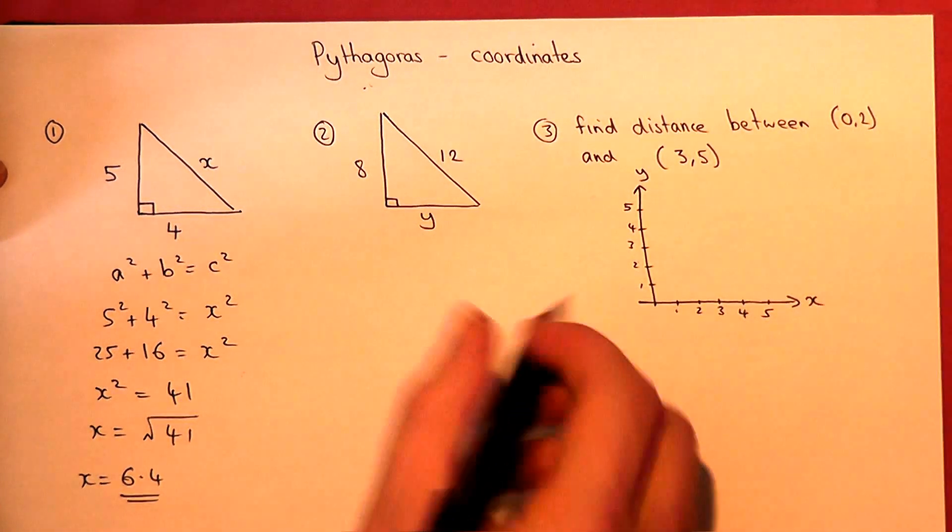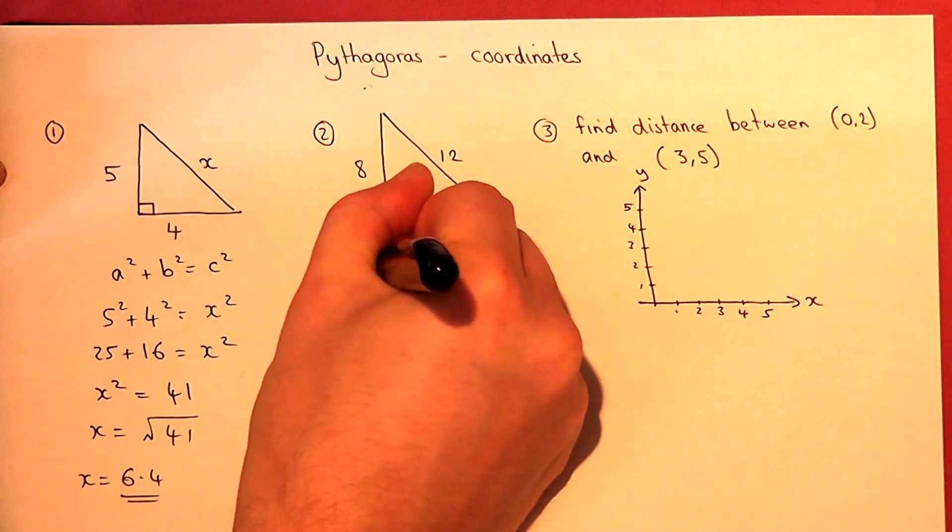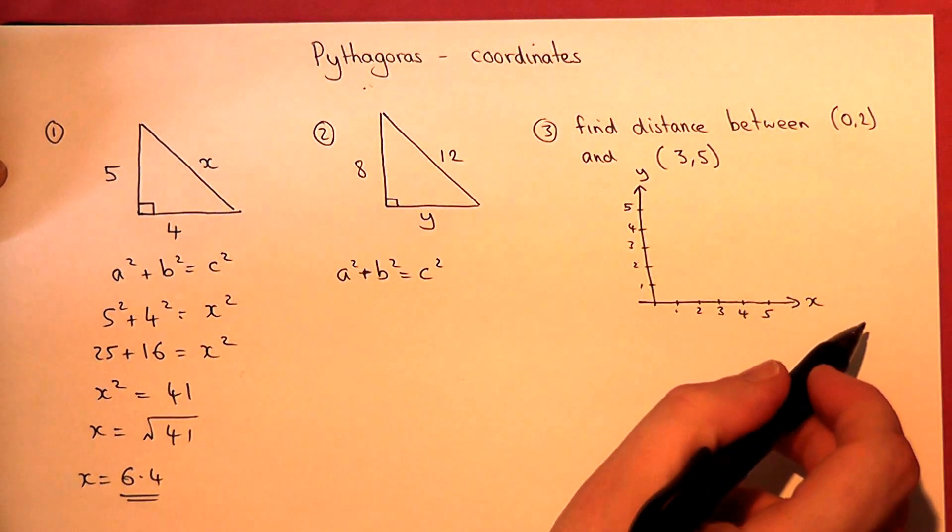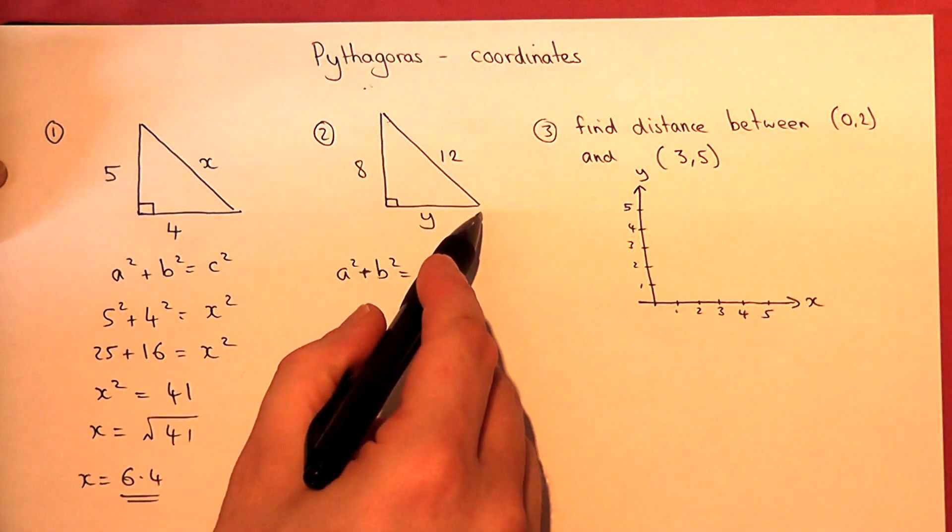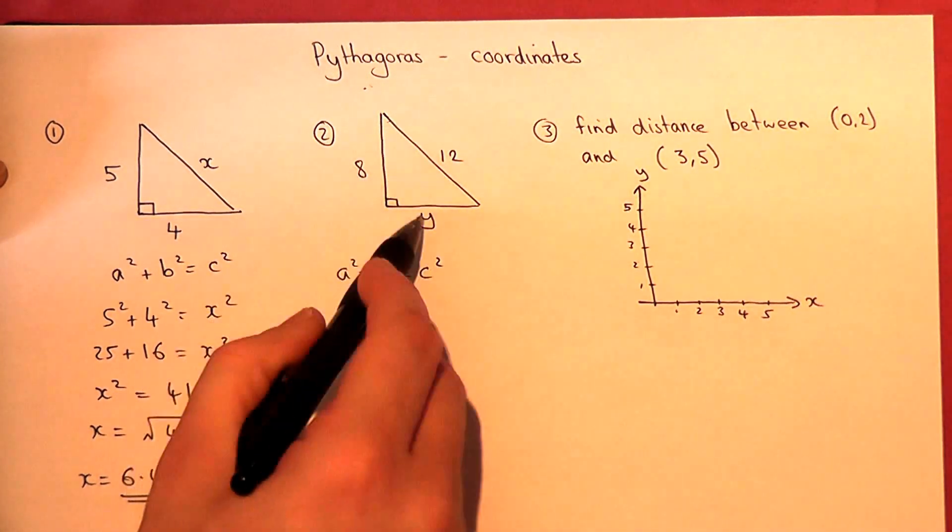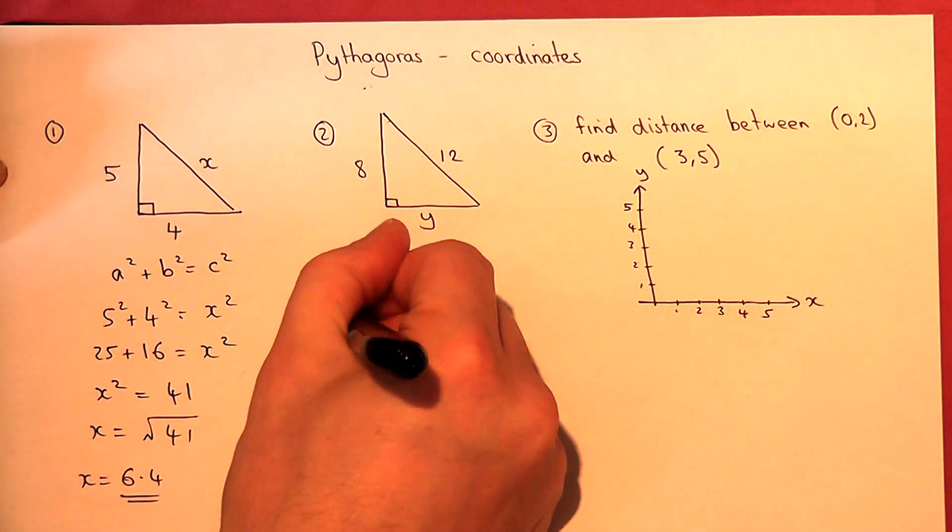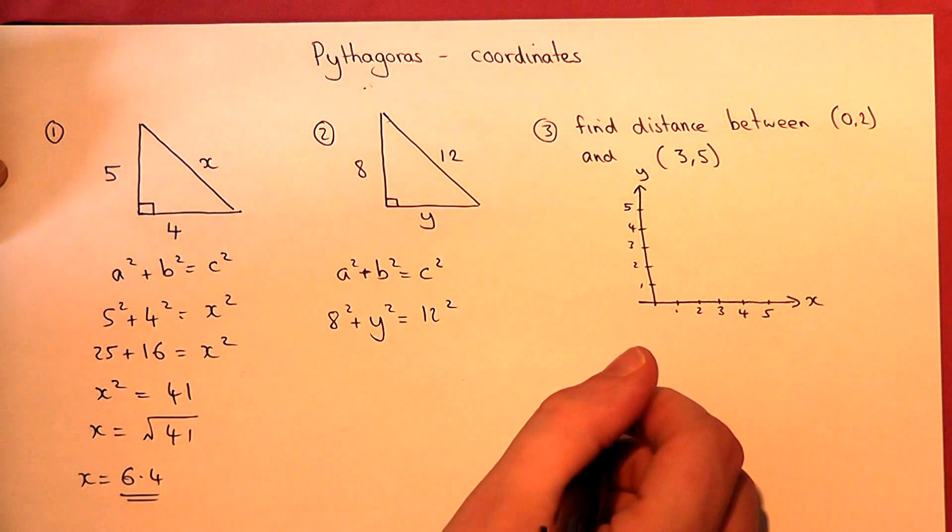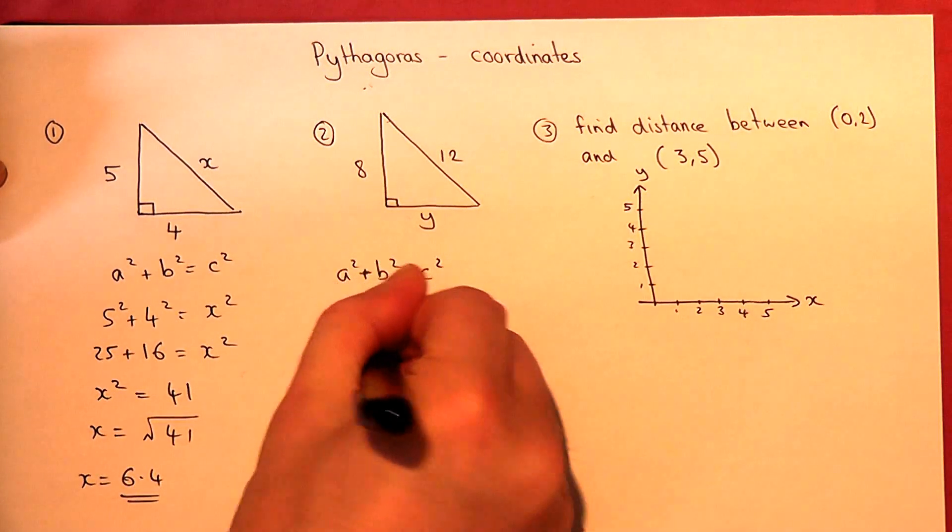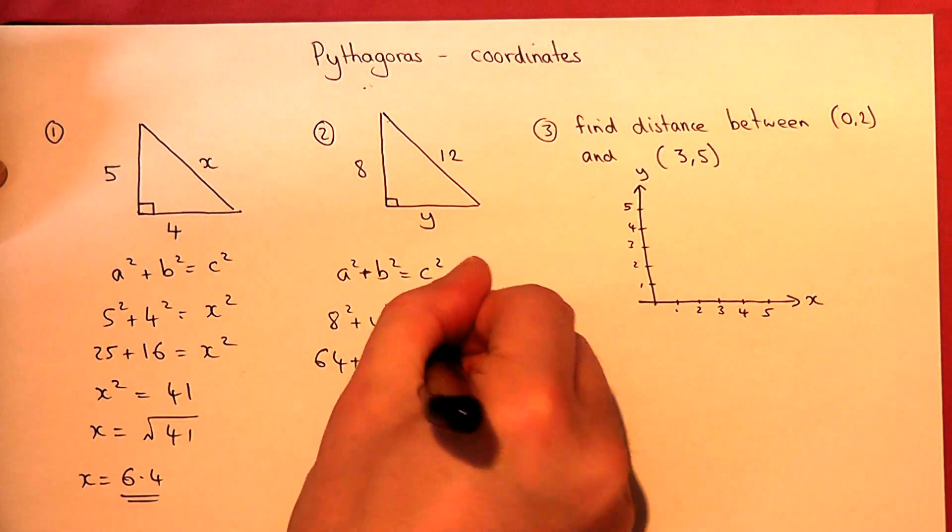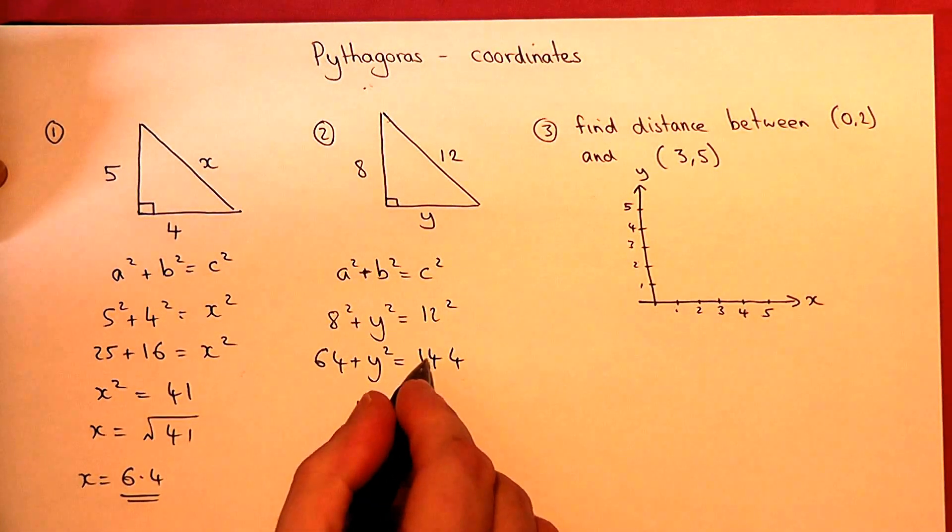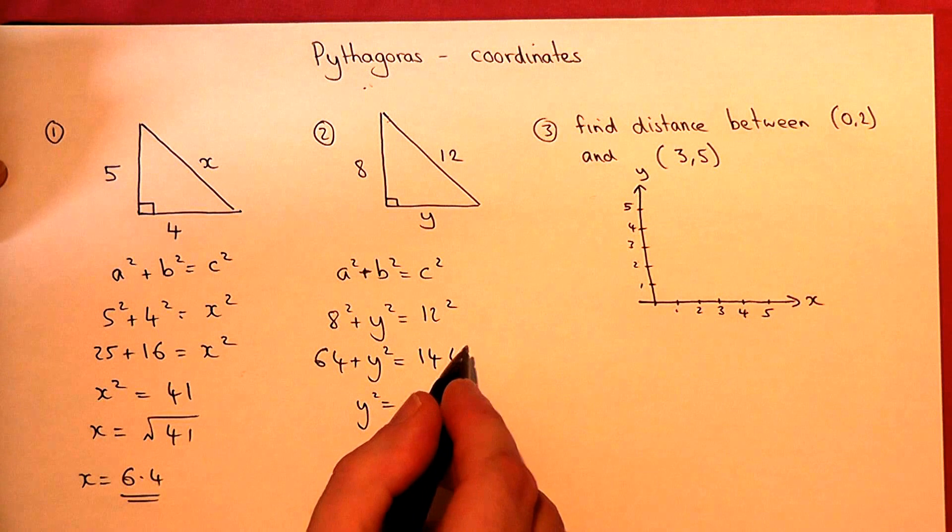Now in the second one, again Pythagoras: a squared plus b squared equals c squared. Again, c is always the hypotenuse. So 8 squared plus y squared equals 12 squared. 8 squared is 64, 12 squared is 144. So y squared equals 144 take away 64.